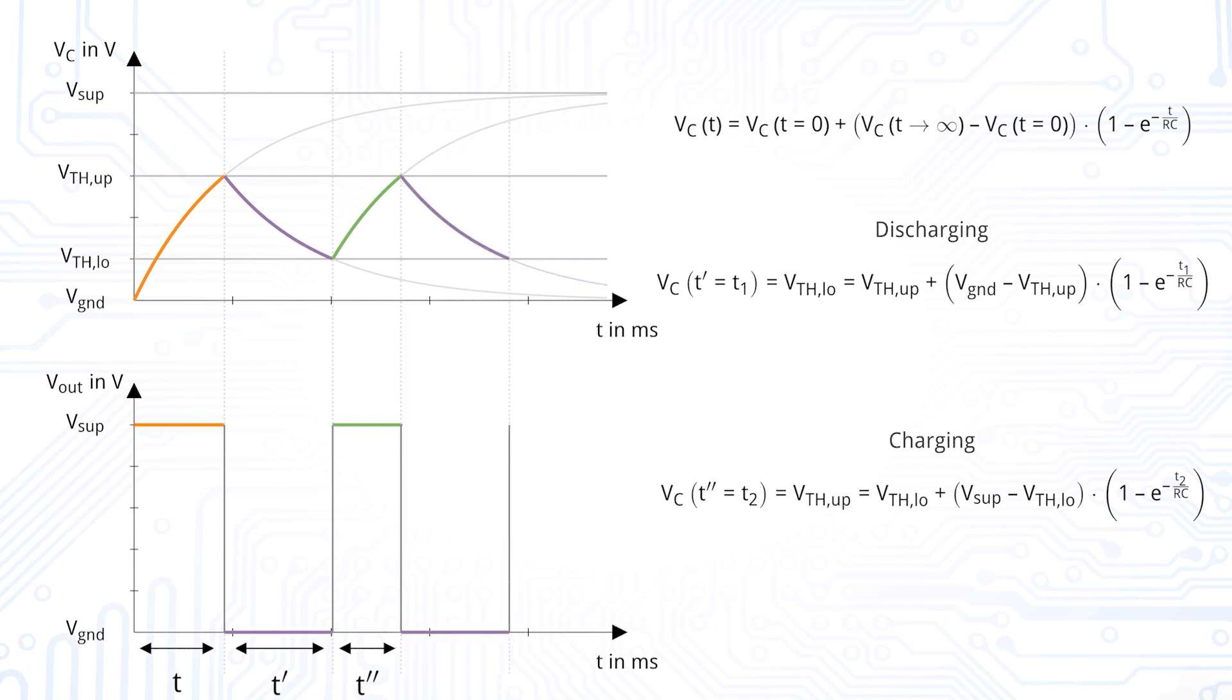But now that we have the charging and discharging formulas, how can we calculate the period or the frequency? We simply have to rewrite our equation in terms of the time T and insert the capacitor voltage at time T, which is either the lower or upper threshold voltage.